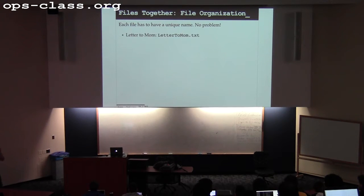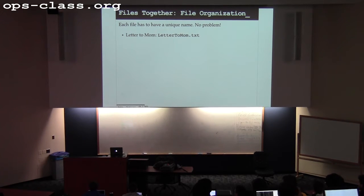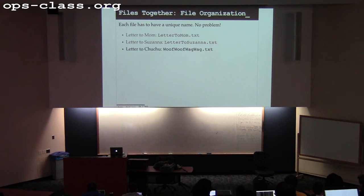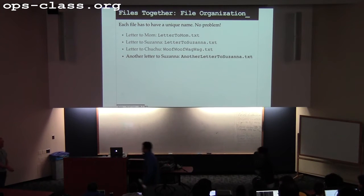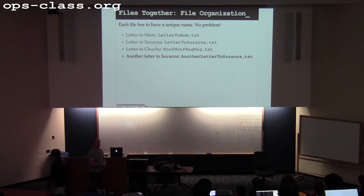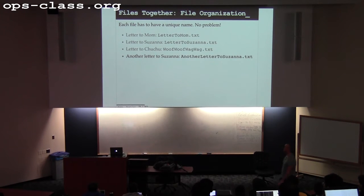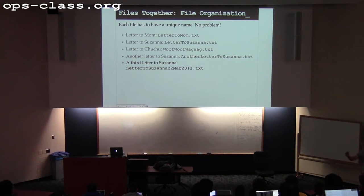Early file systems gave you a flat namespace. You can imagine that starts out okay — I write letters as text files, a letter to my wife, a letter to the dog. But at some point this becomes a pain. You have to establish some sort of really ugly naming convention; maybe you start putting dates in things. This single namespace fills up pretty quickly.